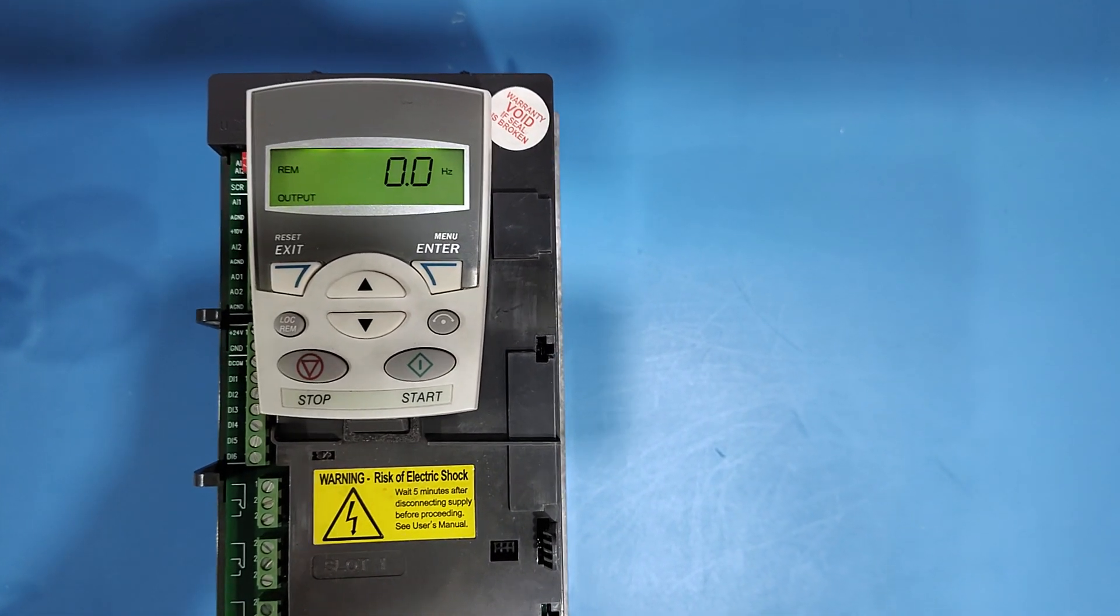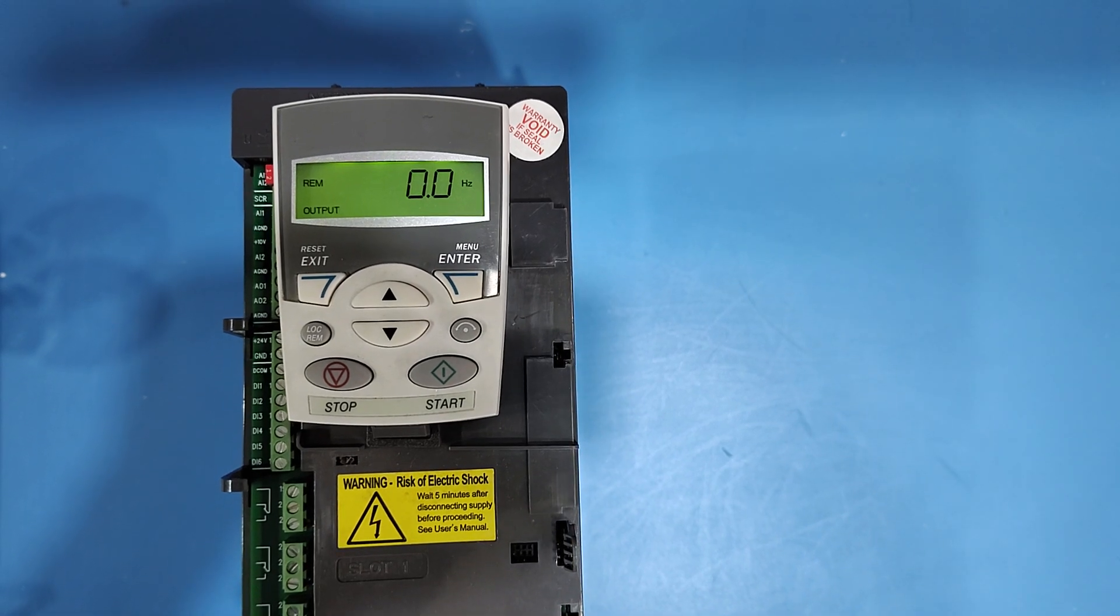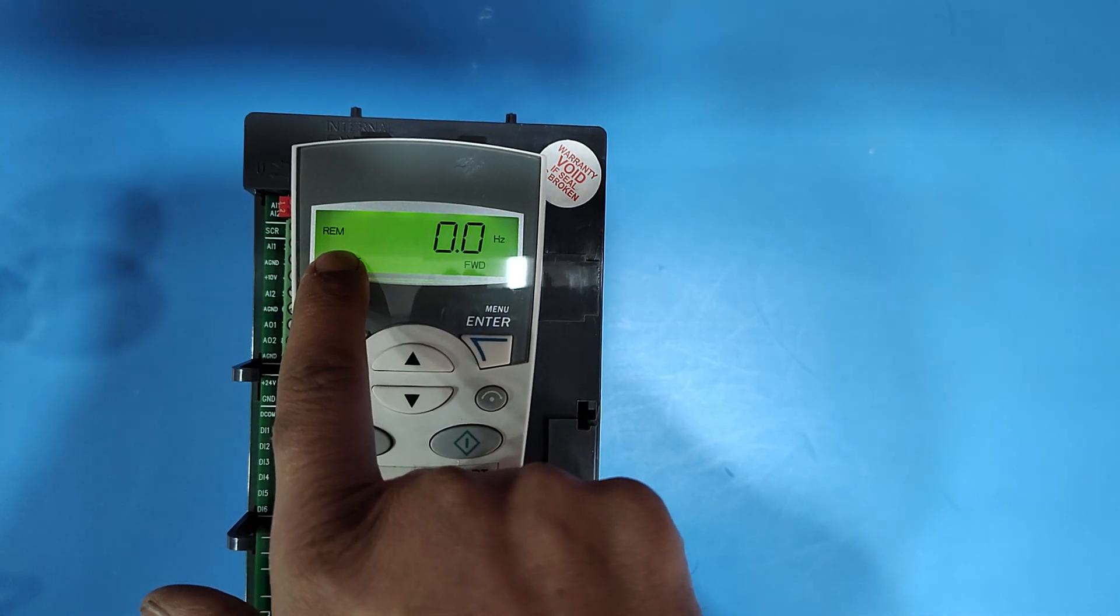How to run drive in local mode? If you want to run ABB ACS 550 drive in local mode, simply change control mode. Here control mode show here.